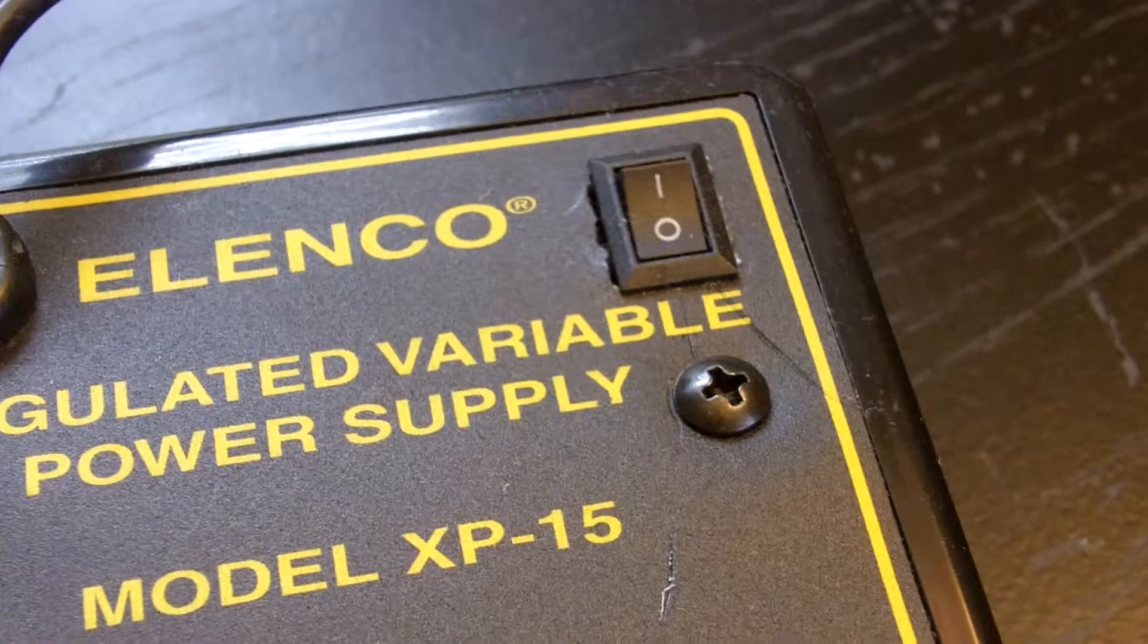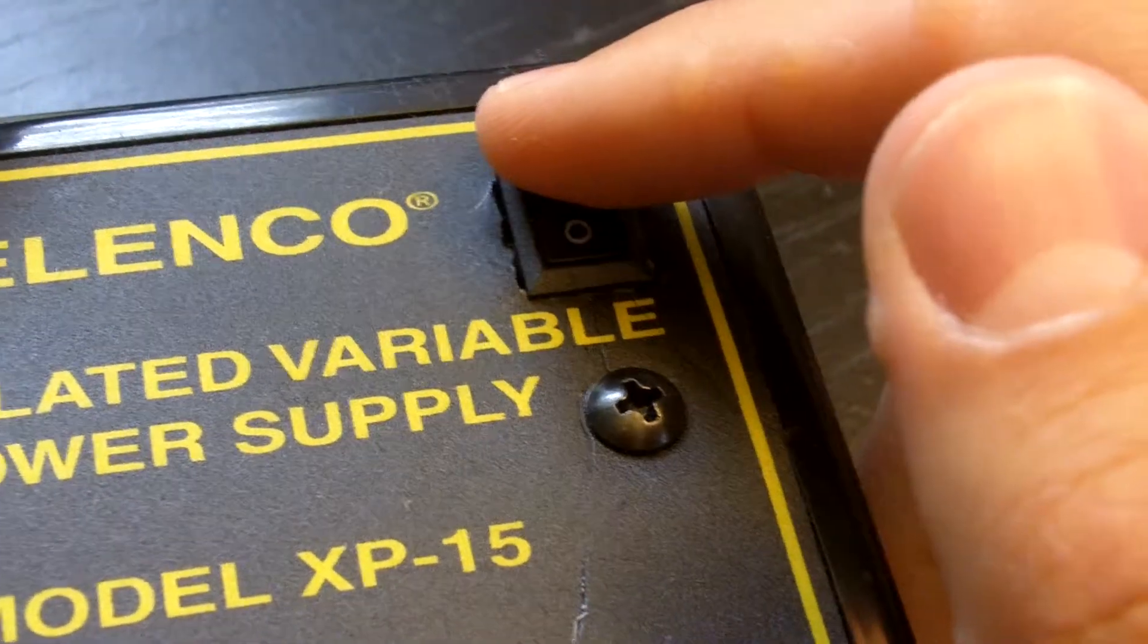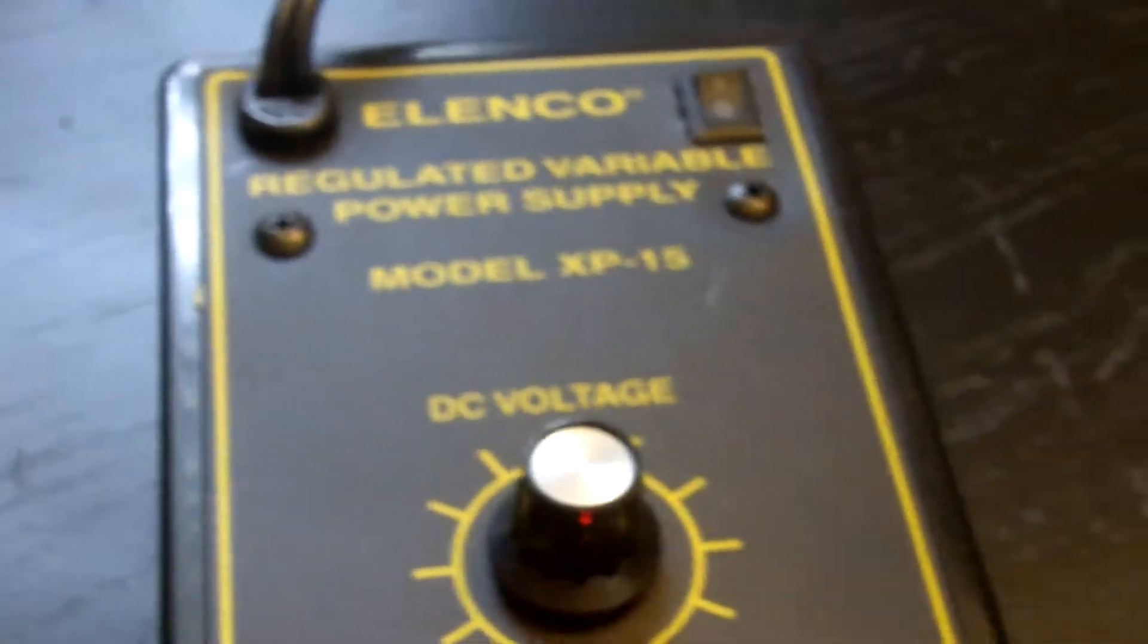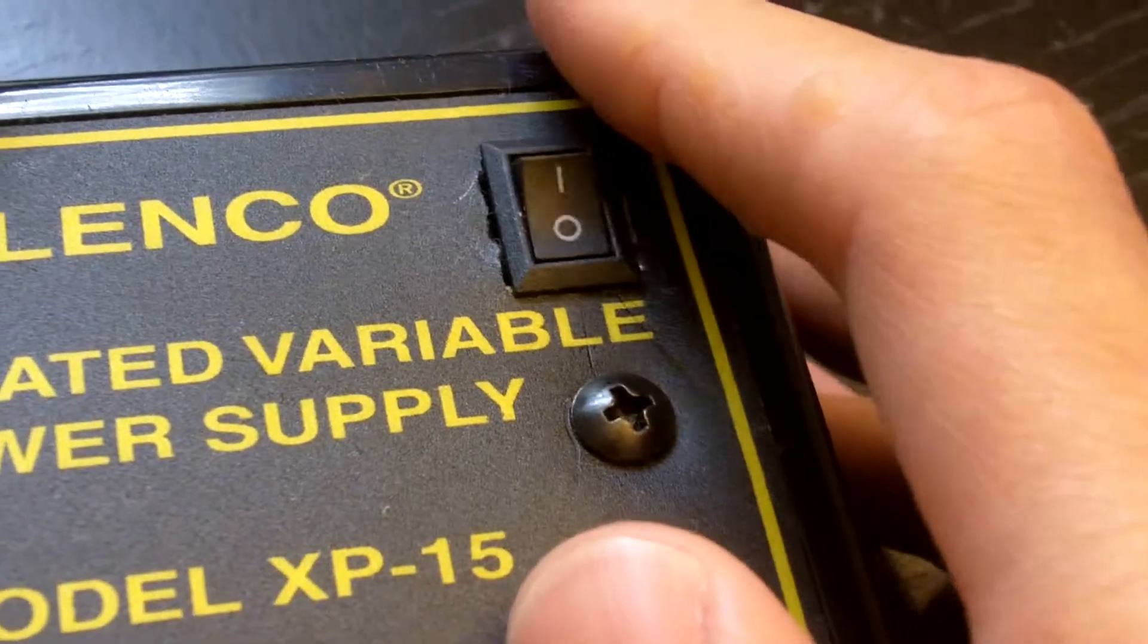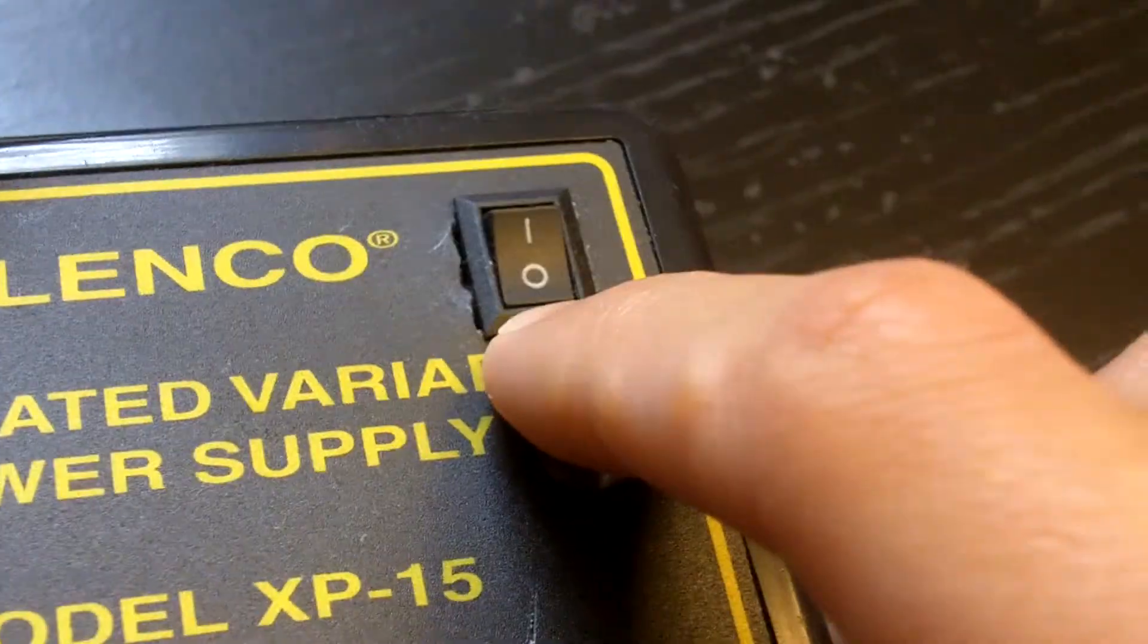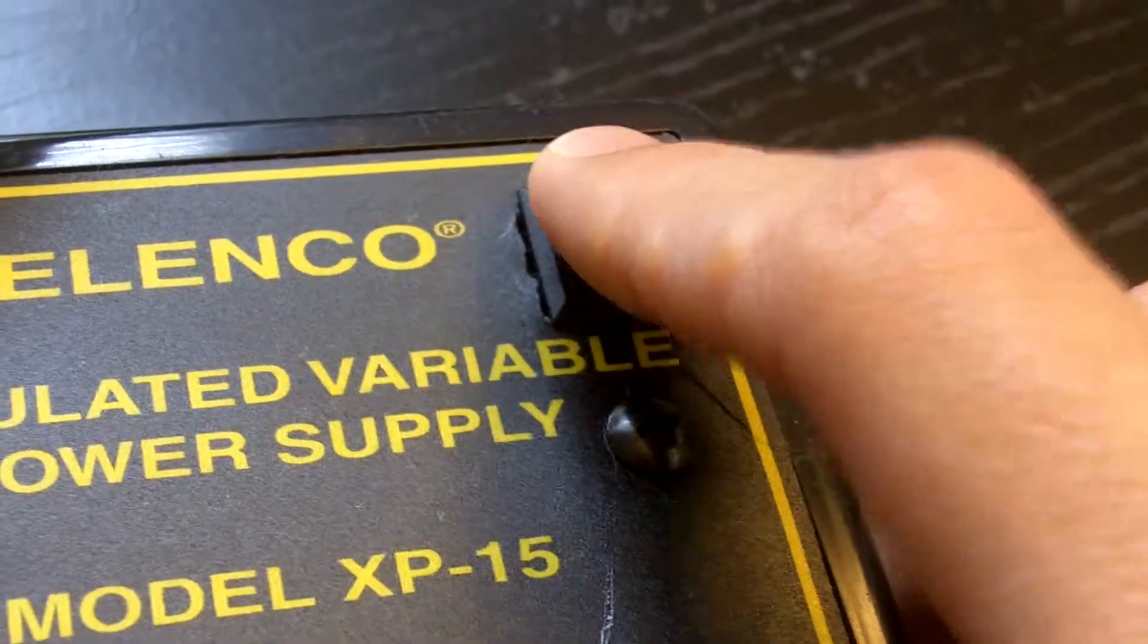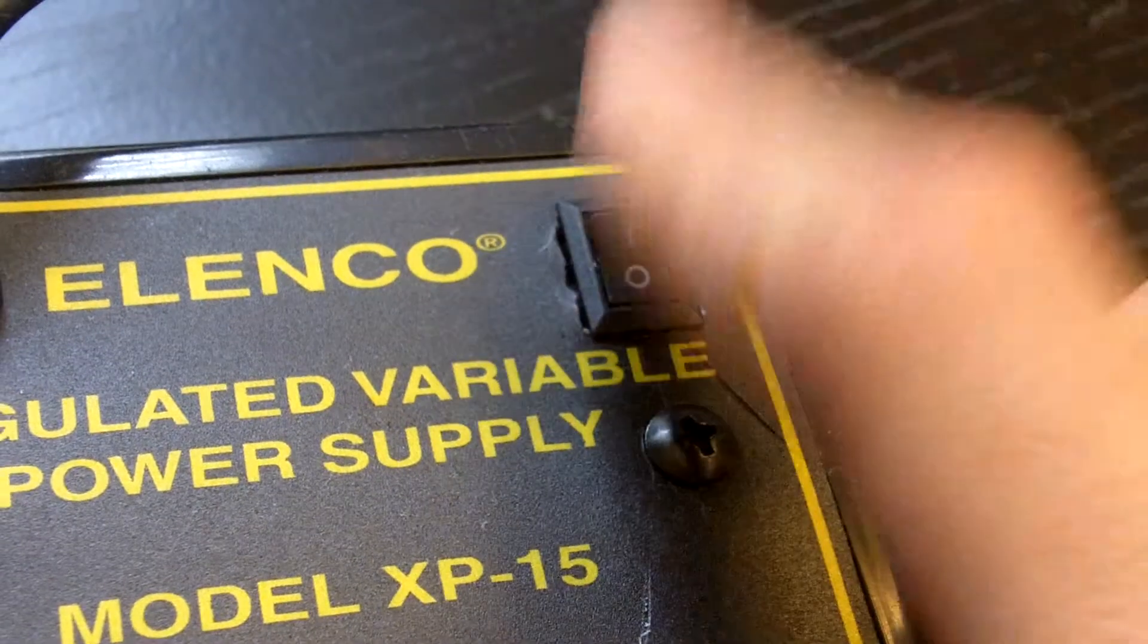In my last modification video I added a rocker switch to allow me to turn the power supply on and off whenever I wanted to. We can see that function now, on and off. I'll post a link to that modification video in the description, so if you want to check out the modification video for installing a rocker switch on the model XP-15 variable voltage power supply you can go ahead and check it out.